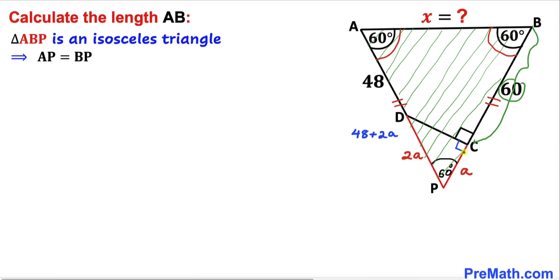units and side length PC is a units, so the total length BP is 60 + a. Since AP = BP, we can write the equation: 48 + 2a = 60 + a.